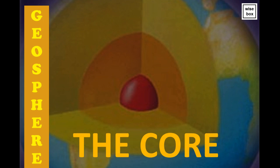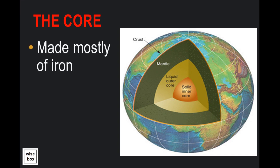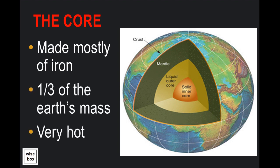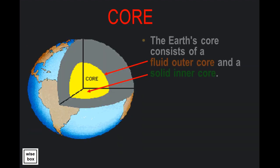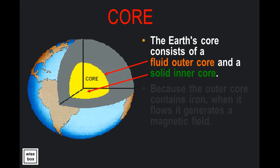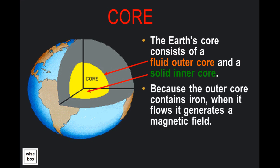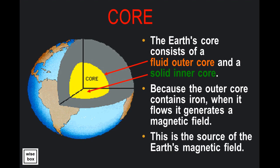The core is made mostly of iron. It is one third of the Earth's mass and is very hot. The Earth's core consists of a fluid outer core and a solid inner core. Because the outer core contains iron, when it flows, it generates a magnetic field. This is the source of the Earth's magnetic field.